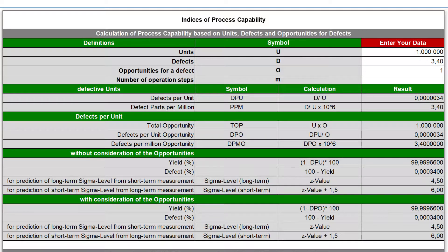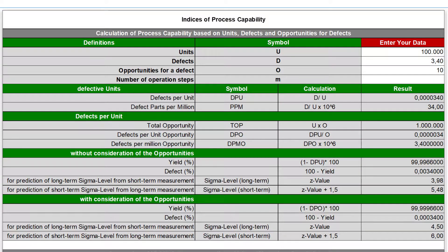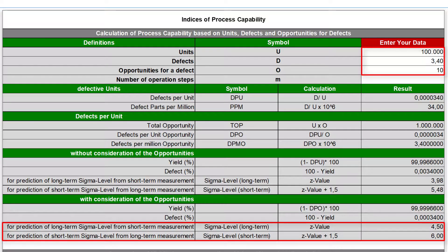If you need to calculate the sigma level for complex products, with several different opportunities for a defect, then the index defects per million opportunities, DPMO, is appropriate. If you for example assume 100,000 units instead of a million, with 3.4 defects and 10 opportunities for a defect, you will get the same results as calculated before. Every opportunity is treated as a unit and the total number of opportunities result from the number of units times the number of opportunities.